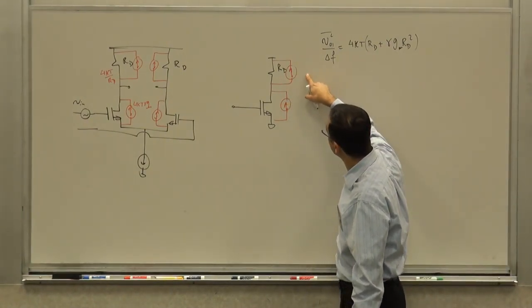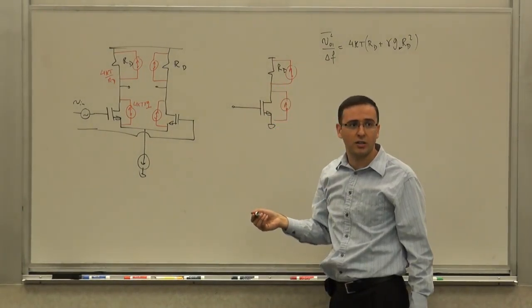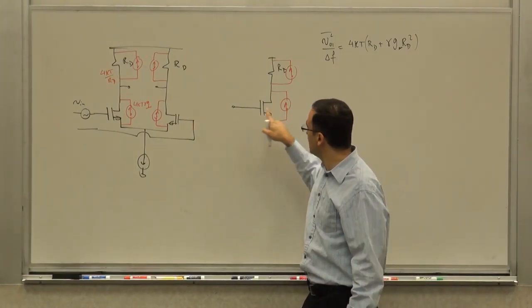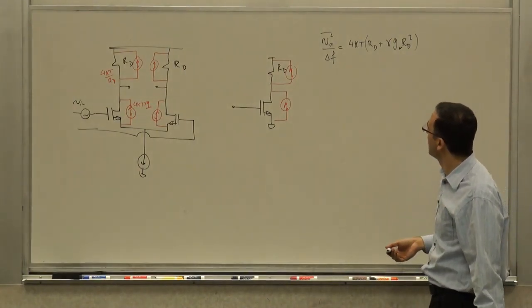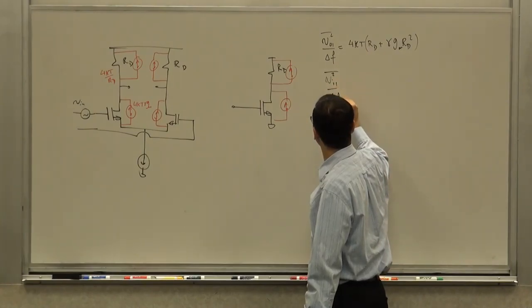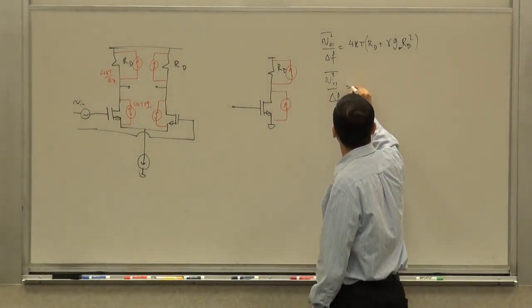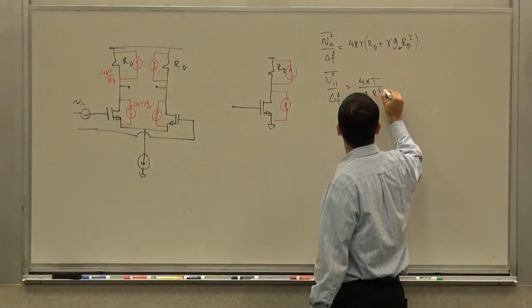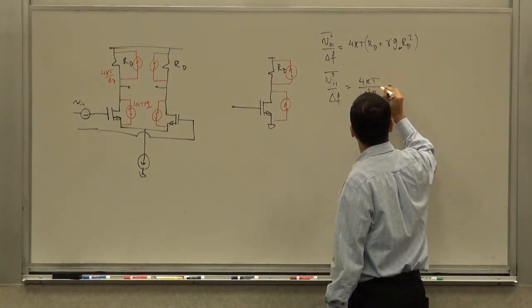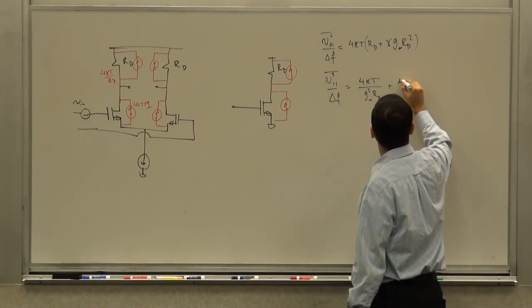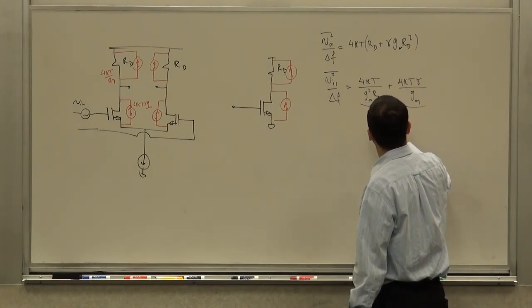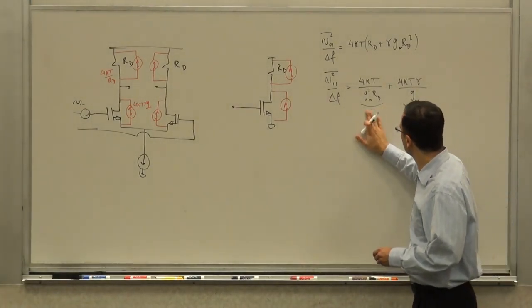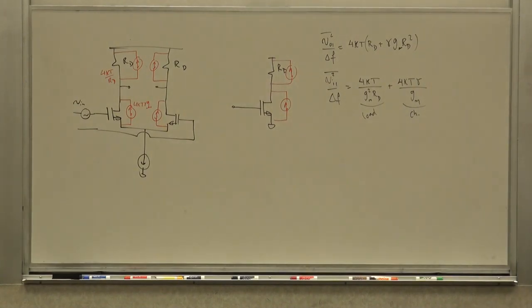What's the input-referred noise for this? It's the output noise divided by g_m R_d squared. So it becomes four kT over g_m R_d squared — that's the contribution of the resistor — plus four kT gamma over g_m, which is the contribution of the channel. These are the input-referred noise terms, and this is exactly the same as what you'd have for the first two terms of the common-source stage, because it is the same stage.